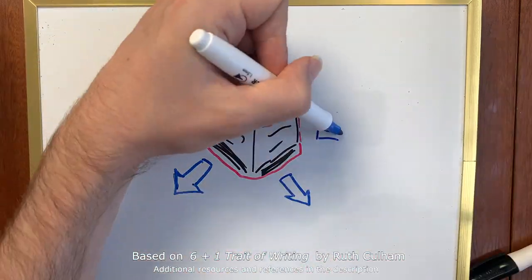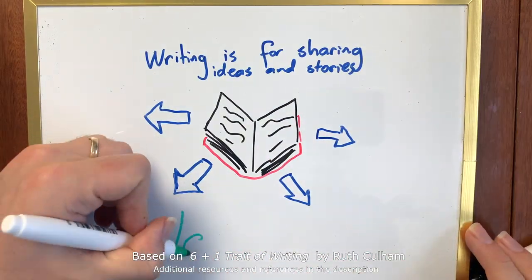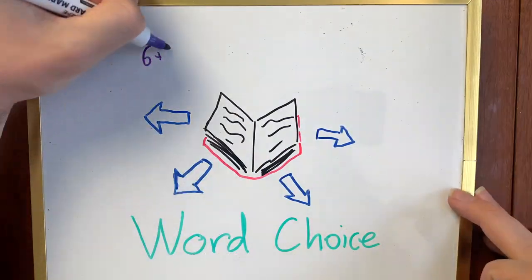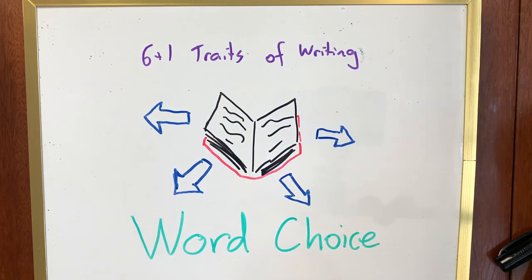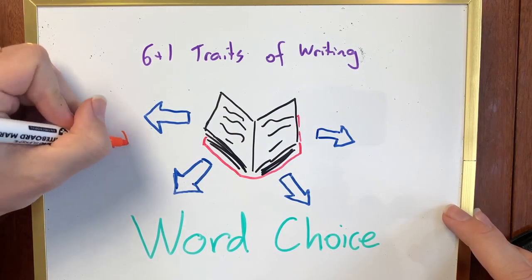Writing is for sharing ideas and stories. Something we can use, and this is sometimes overlooked, is word choice, another one of the 6 plus 1 traits of writing.